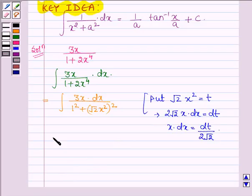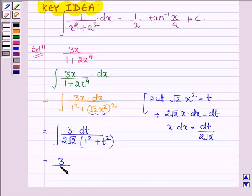Thus this expression can be written as integral 3 times dt upon 2 root 2, over 1 square plus t square. This equals, taking the constants outside the integral sign, 3 upon 2 root 2 integral dt upon t square plus 1 square.